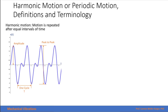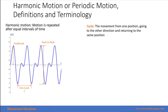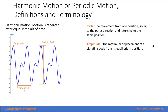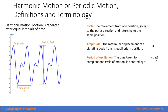We define harmonic motion or periodic motion as a function that repeats itself after equal intervals of time. One cycle is the movement from one position, going to the other direction, and returning to the same position. The amplitude is the displacement of the vibrating body from its equilibrium position to the maximum value of the function. The period of oscillation is the time it takes to complete a cycle of motion, denoted by tau or capital T. The frequency of oscillation is the number of cycles per unit of time, equal to one over the period.